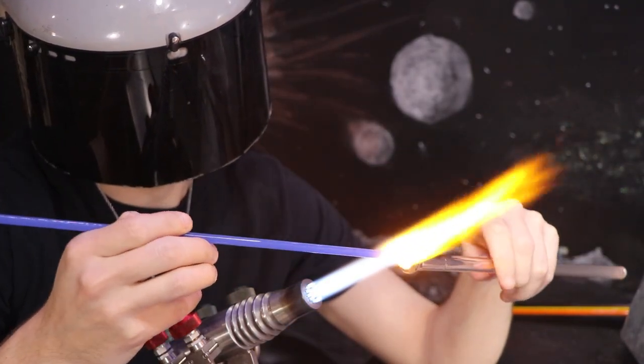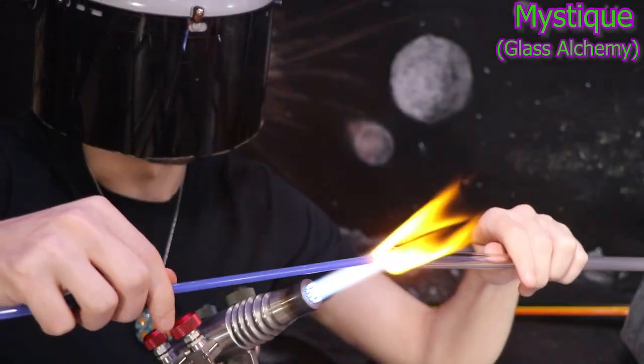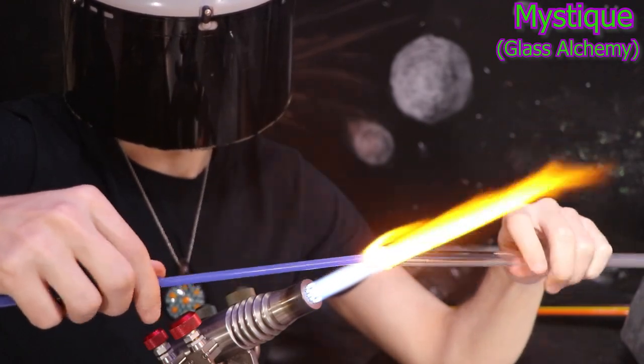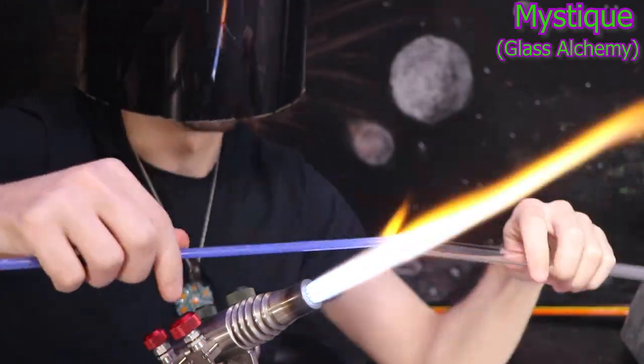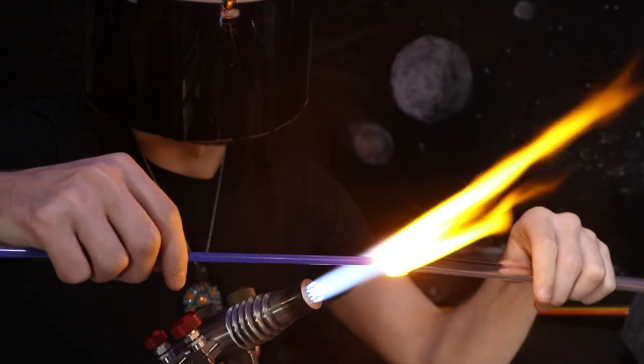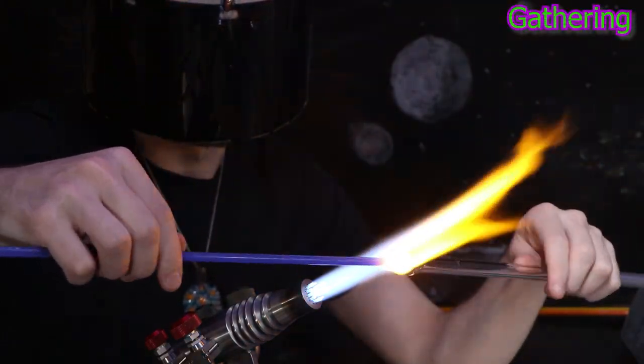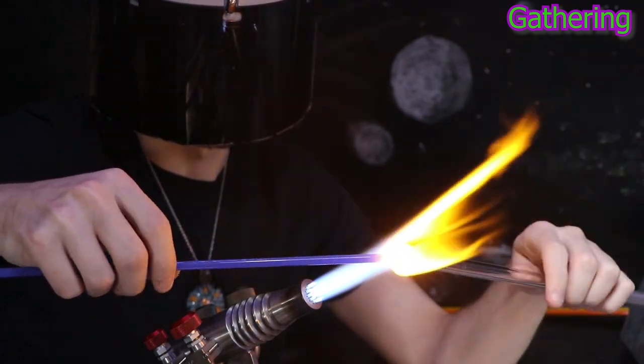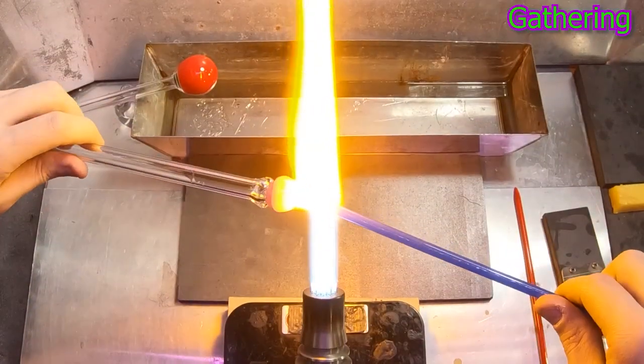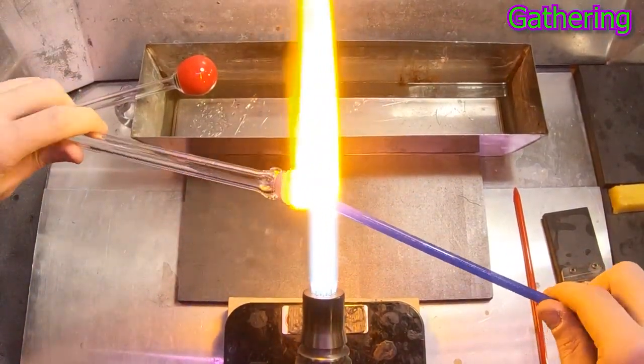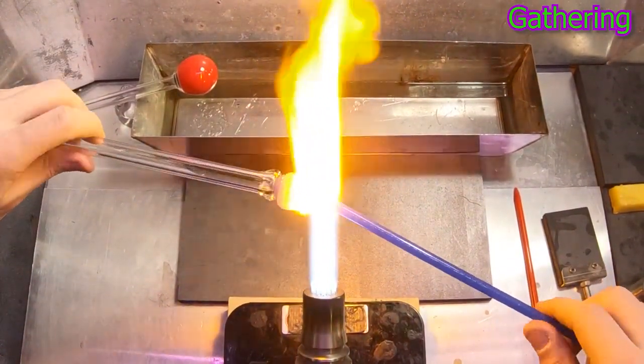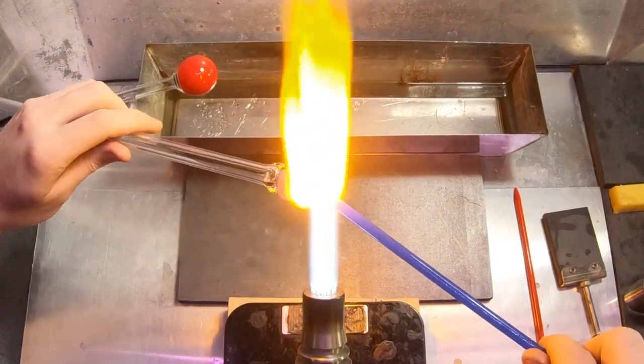And so here is Mystique, a pastel blue from Glass Alchemy. I haven't used this one before so I'm giving it a test run today. A lot of times the color manufacturers will test out new formulas to see what works and discontinue the ones that don't. What I'm doing here is called gathering. I'm gathering the Mystique onto my blowtube.